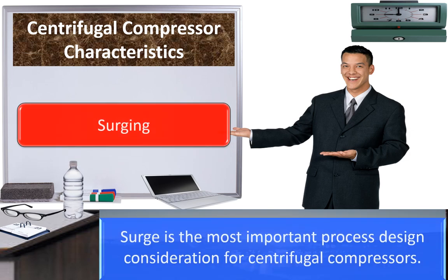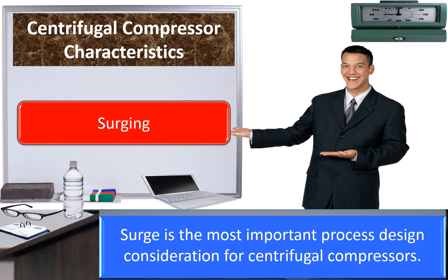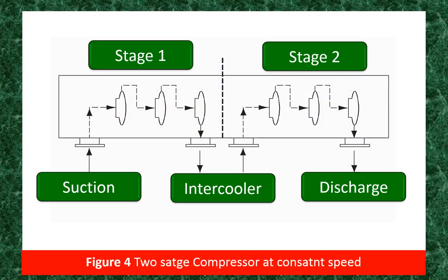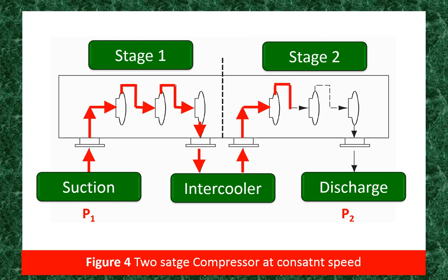Having understood the compressor characteristics and the basic slope of the performance curve, let us move on to another important design and operational aspect of compressors: surging. Surging is the most important process design consideration for centrifugal compressors. This is a sketch of a two-stage centrifugal compressor running at constant speed, taking suction at pressure P1 and delivering at pressure P2 which is higher. As long as the operating point determined by the plant load and the pressure ratio falls in the zone BC as discussed earlier in the performance curve, the compressor delivers satisfactory performance.